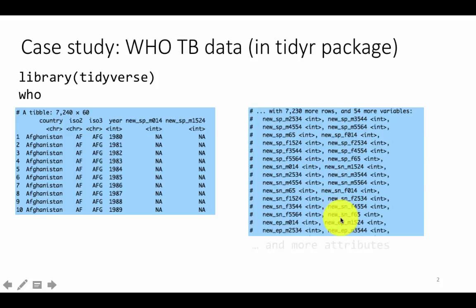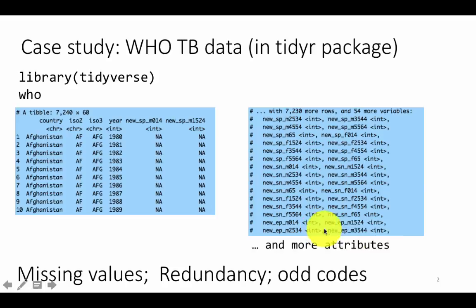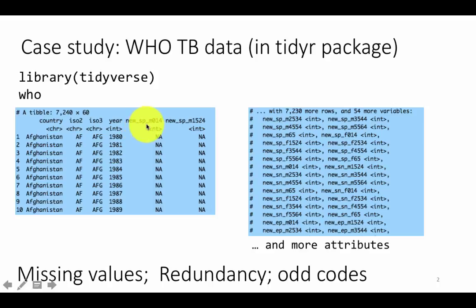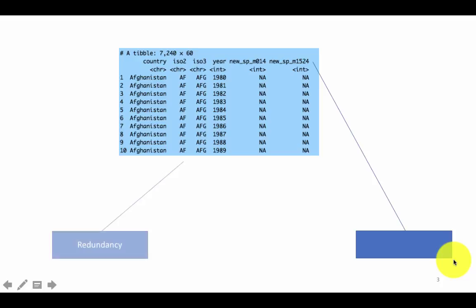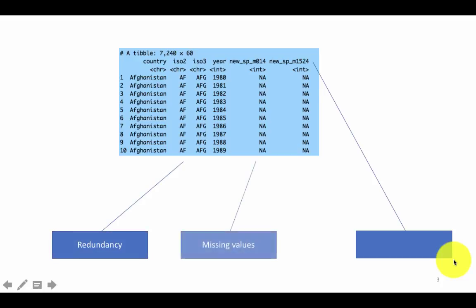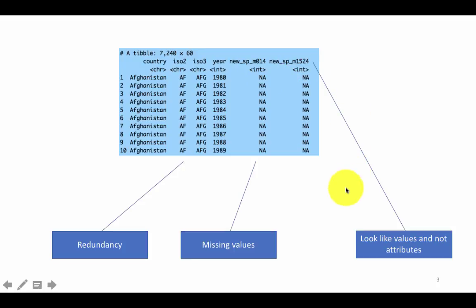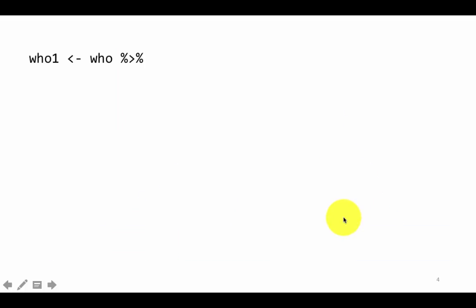As you can see, this data has a lot of missing values and redundancy — the country code is represented in three different ways. It also has some odd codes like new_SP_M14 whose meaning is not immediately clear. So there is redundancy, there are missing values, and it looks like these things look like values and not attributes. If you go in and take a closer look, you'll see that each of these columns has some numbers.